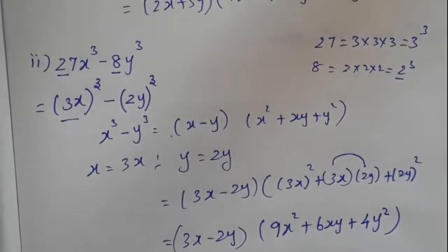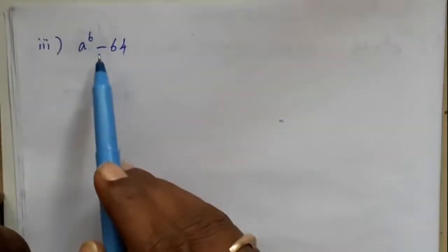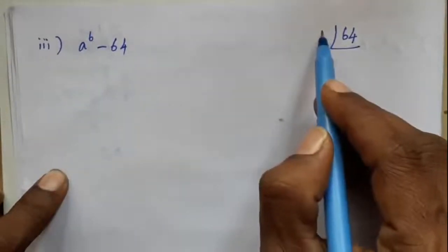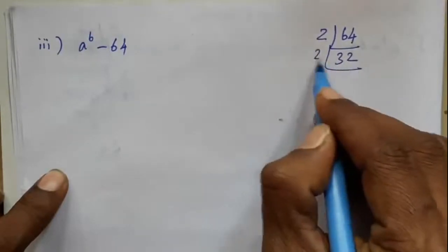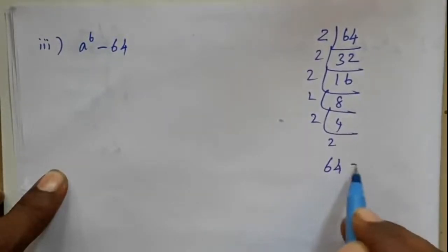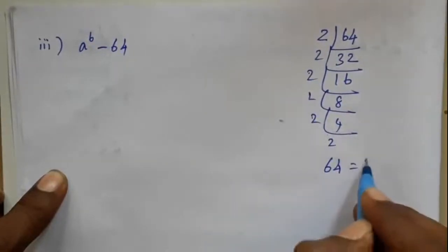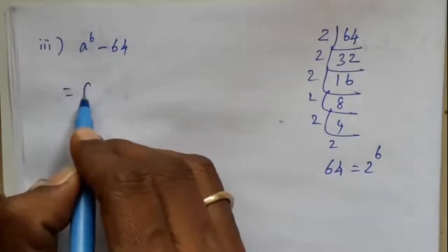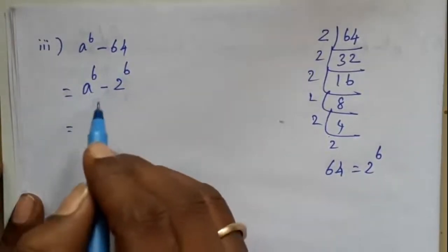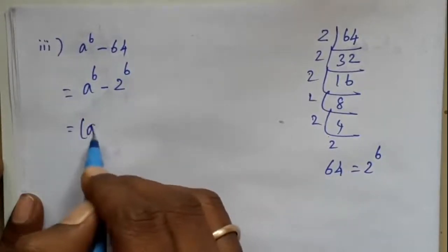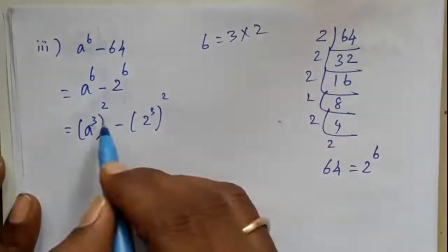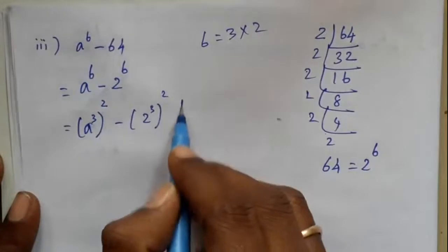3x to the power 6 minus 64. y squared equals this formula. We can use this formula. 2x equals 3x, 4x equals 4x, 6 minus 2 to the power 6. We have a formula for this. A to the power 3 whole squared minus 2 to the power 3 whole squared. We use this formula — 3 or 2 — using whole power squared.